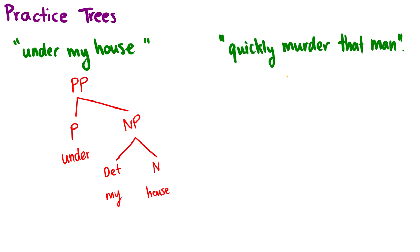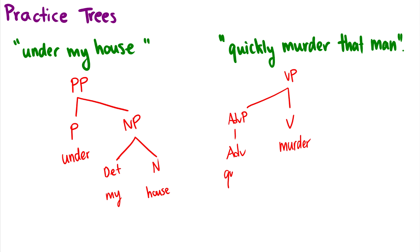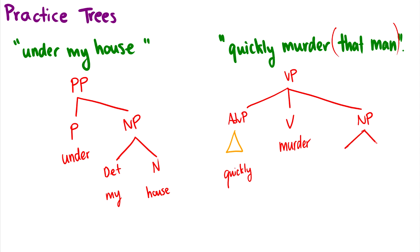'Quickly murder that man' — this is a verb phrase. The head of the verb phrase is the word 'murder'. To the left, we see the specifier 'quickly', so this is going to be an adverb phrase which breaks into an adverb. Depending on the type of course you're taking, you may not even write the phrase level in, or you may abbreviate it with a triangle. Then 'that man' — this is our noun phrase complement, and that noun phrase complement will break into a determiner and a noun. So: murder that man.